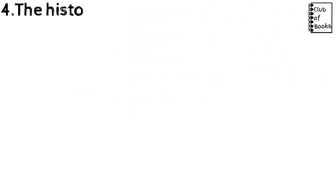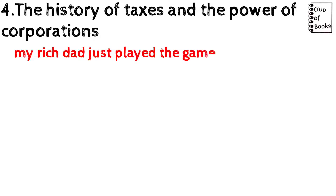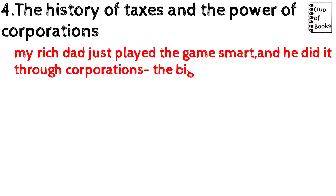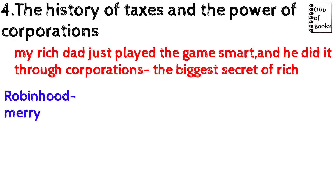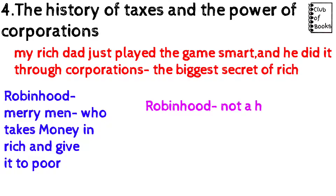Next, Chapter 4: 'The History of Taxes and the Power of Corporations.' Here he says his rich dad just plays the game smarter through corporations — that is the biggest secret of the rich. We all know Robin Hood, who takes money from the rich and gives it to the poor. His rich dad does not consider Robin Hood a hero — he says Robin Hood is a crook, dishonest to himself.